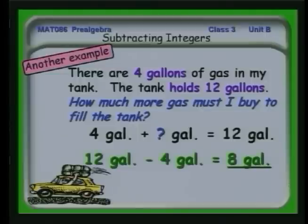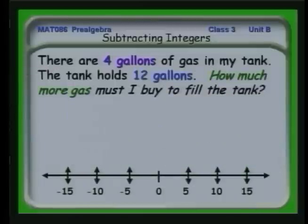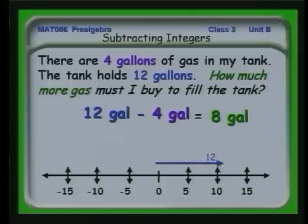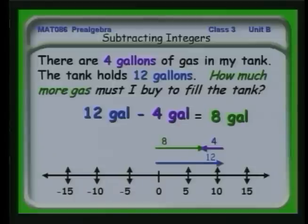We've done this before by saying 12 minus 4 is equal to 8. Let's look at this again using the number line. There's 12 gallons minus 4 gallons is 8. We can actually say we have 12 plus a minus 4 equal to 8. Casting our original subtraction problem on the number line, we can see that subtraction can be thought of as an addition of a negative number.